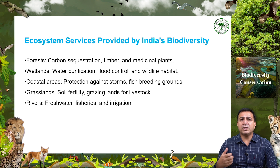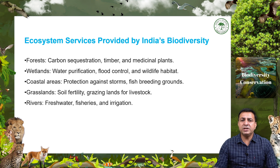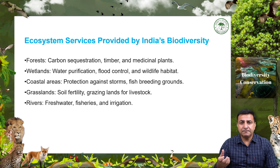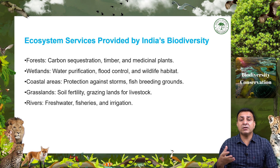As a mega diverse nation, India also provides many ecosystem services — the benefits that humans derive from nature, essential for well-being and survival. Key ecosystem services provided by Indian biodiversity include forests, which provide carbon storage, oxygen production, timber, and non-timber products like honey and medicinal plants. Wetlands provide water purification, flood regulation, and habitats for aquatic species.